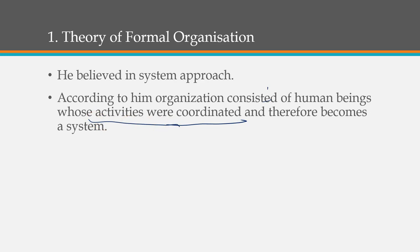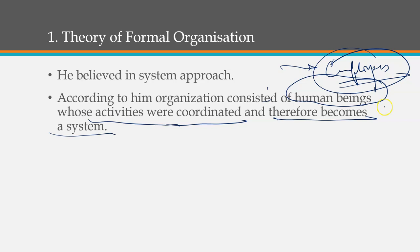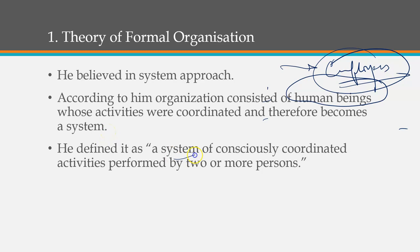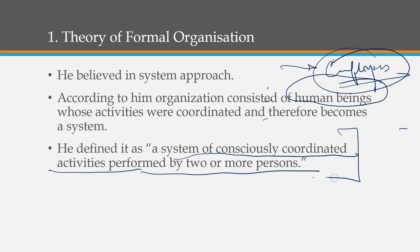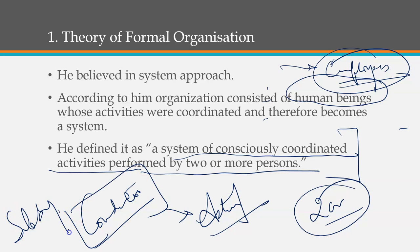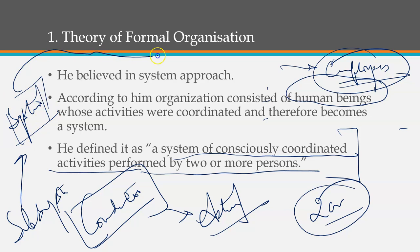The human beings — the employees working in the organization — all have some activity to perform. Some may be doing labor work, some may be doing managerial jobs, but everyone has some activity. What is very important is that there must be coordination among their activities. If there is no coordination, the system will collapse and will never run properly.